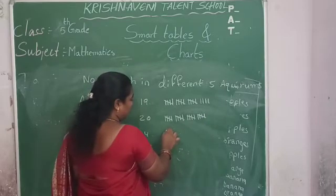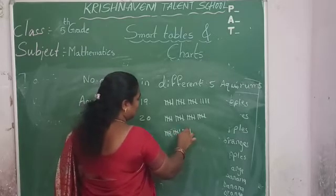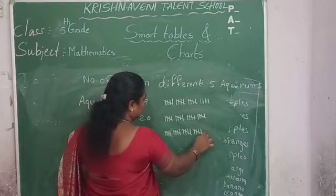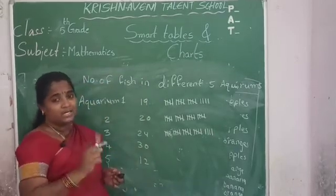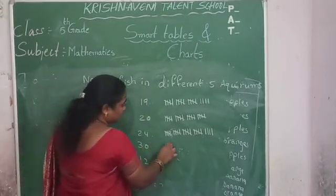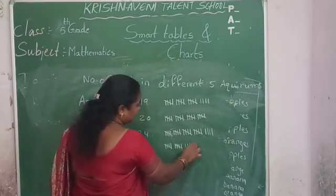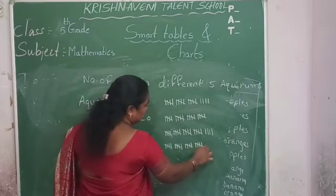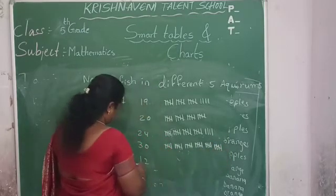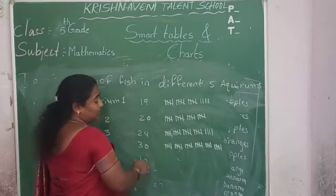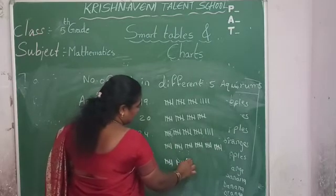For 24 fishes, we draw tally marks counting: 1, 2, 3, 4, 5 — then 6, 7, 8, 9, 10 — then 11, 12, 13, 14, 15 — then 16, 17, 18, 19, 20 — then 21, 22, 23, 24. For aquarium four with 30 fishes, we continue counting up to 30 in groups of five. For aquarium five with 12 fishes, we count up to 12: 1 through 5, 6 through 10, 11 and 12. This is how tally marks represent the data.